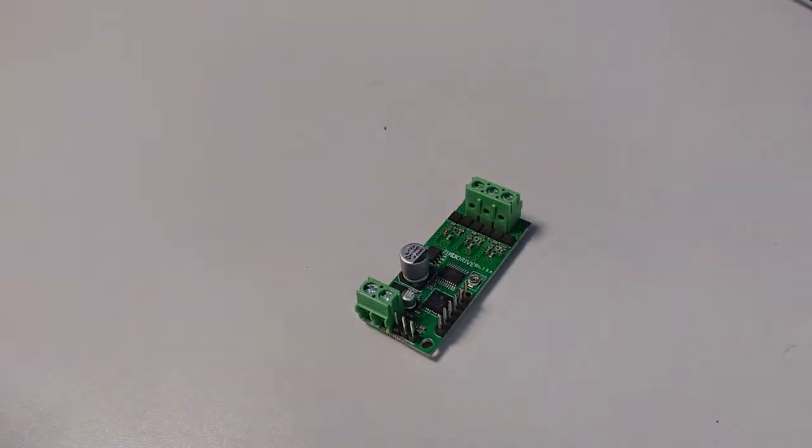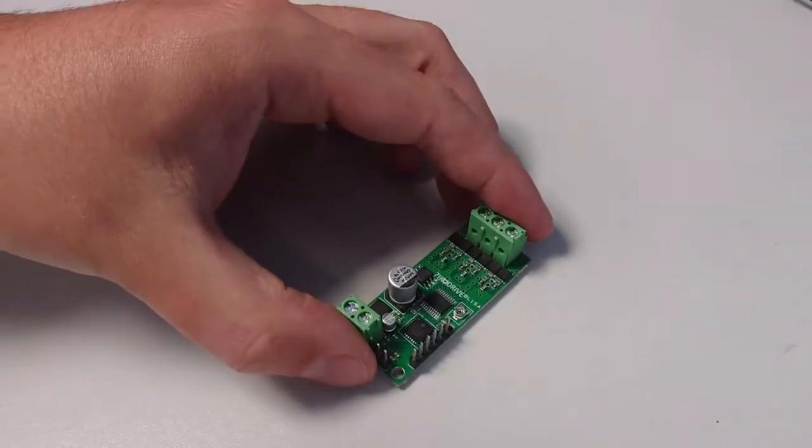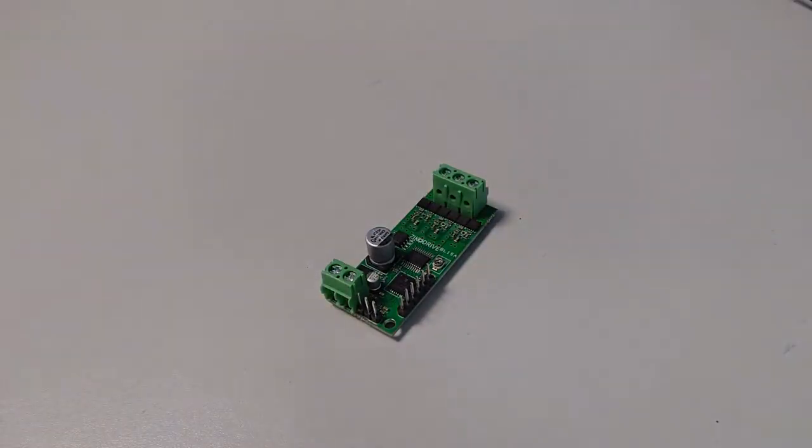We have the standard setup that you would get if you were buying it from the shop. For example, you've got speed control which is generally analog - you can use a potentiometer if you want to - direction and enable. Pretty straightforward.